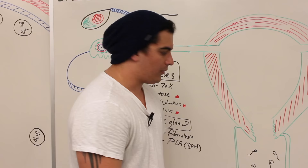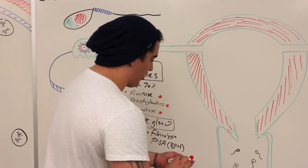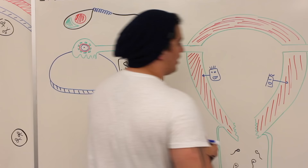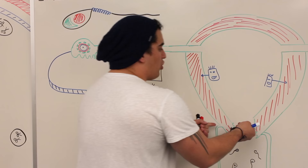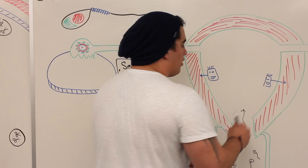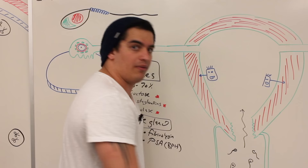Now the sperm cell gets ejaculated into the female reproductive tract. Fructose is important because it provides an energy source for the mitochondria to process and produce ATP for movement. Prostaglandins are really important — they act on the smooth muscle of the uterus and tell it to contract, but in a weird way: it causes retropulsion, contracting backwards, which actually helps to suck and squeeze the sperm cells up into the female reproductive tract.